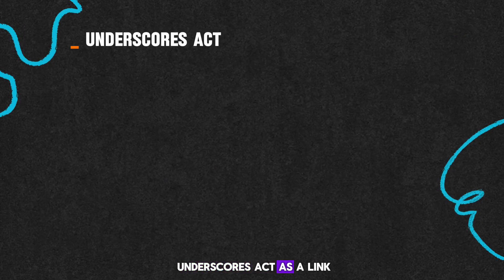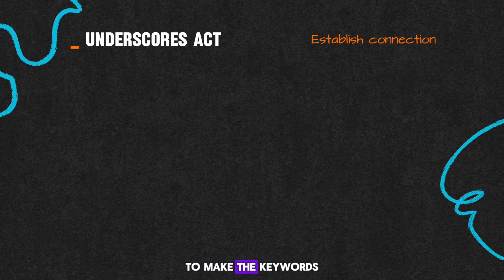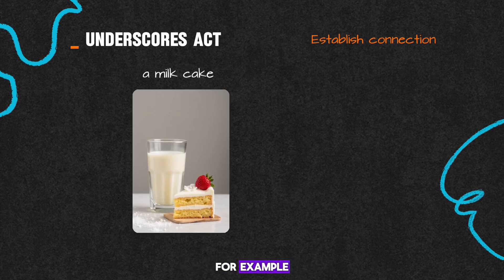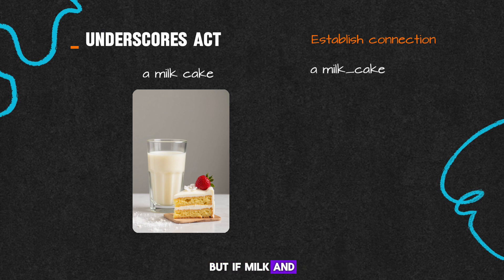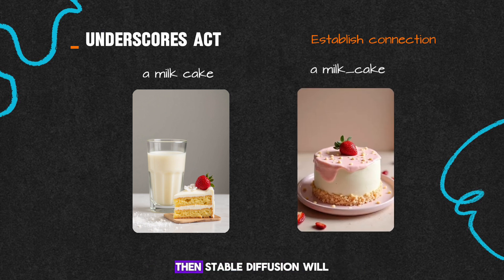Underscores act as a link to make the keywords more closely connected. For example, 'milk cake' might be understood by Stable Diffusion as a glass of milk and a cake. But if milk and cake are connected by underscores, then Stable Diffusion will understand milk and cake as a whole.